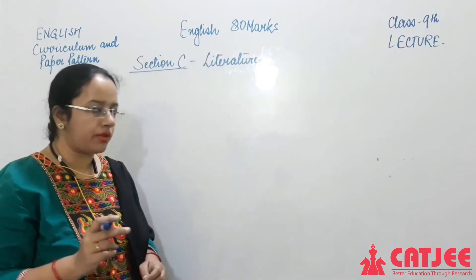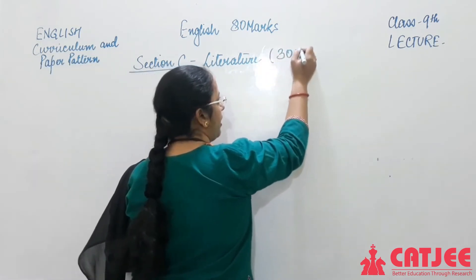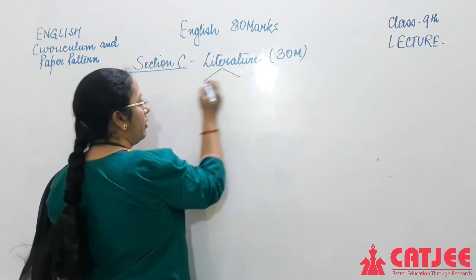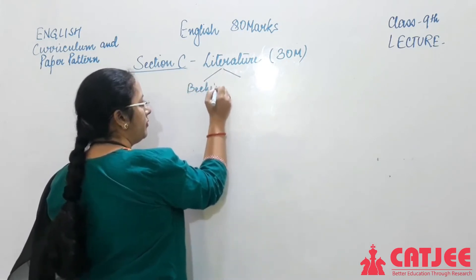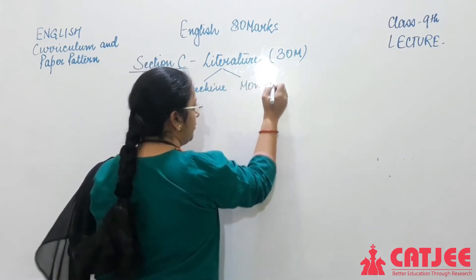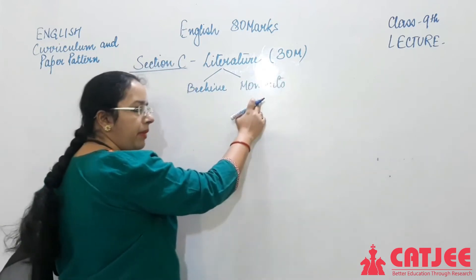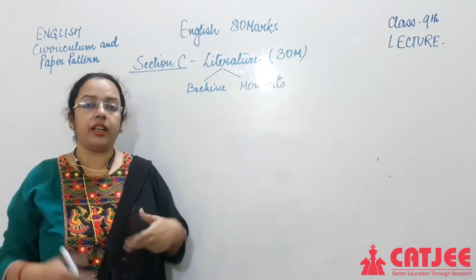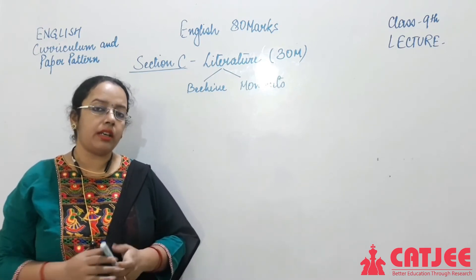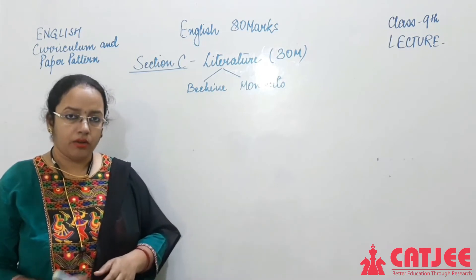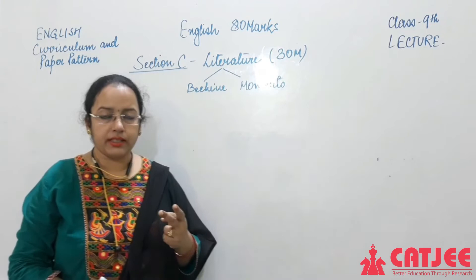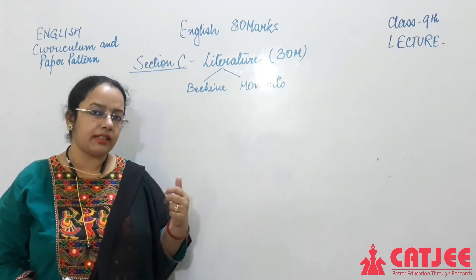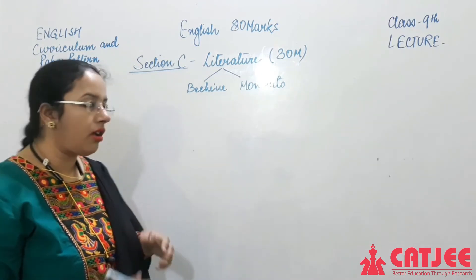Literature includes two books and since only 30 marks are left, it is 30 marks. Literature includes Beehive — your main textbook — and Moments — your Supplementary Reader. The supplementary reader is not optional reading for pleasure; it is a compulsory book with equal weightage to Beehive.